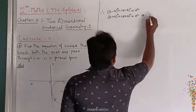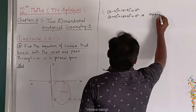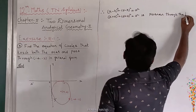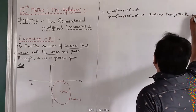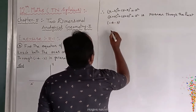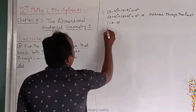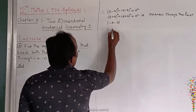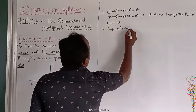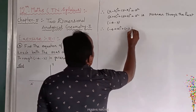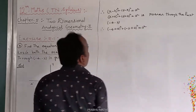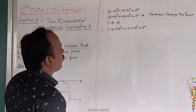Since the circle passes through the point minus 4 comma minus 2, we substitute: minus 4 plus a whole square plus minus 2 plus a whole square equals a squared.